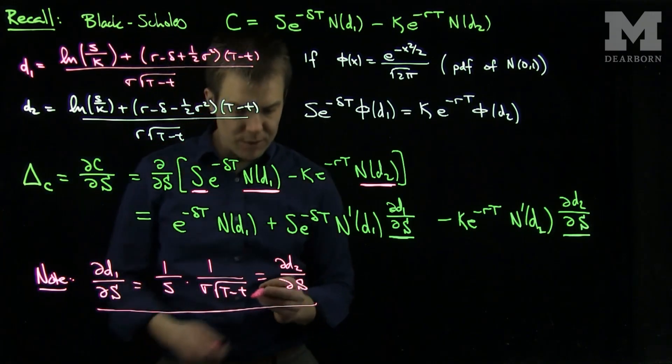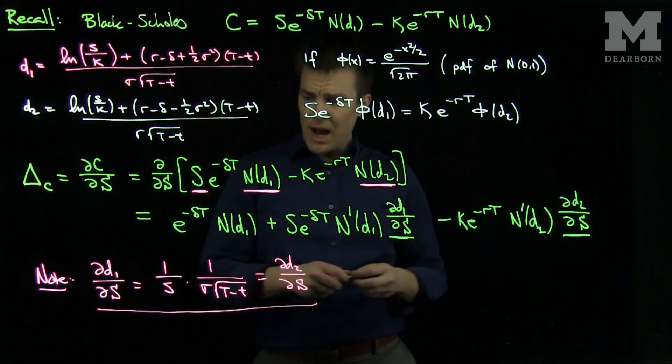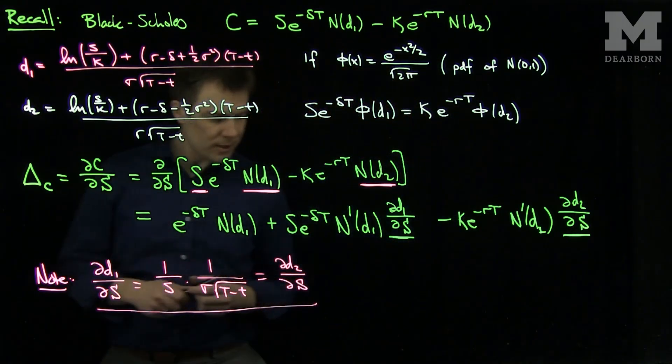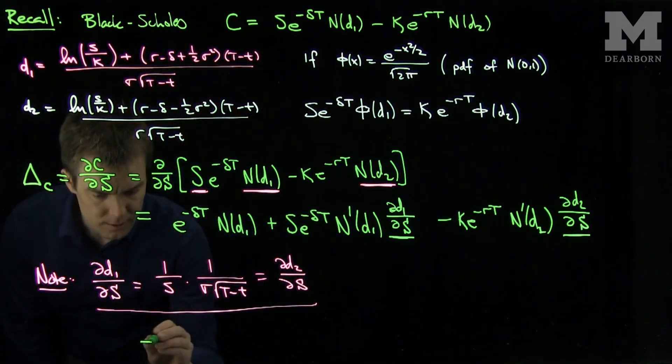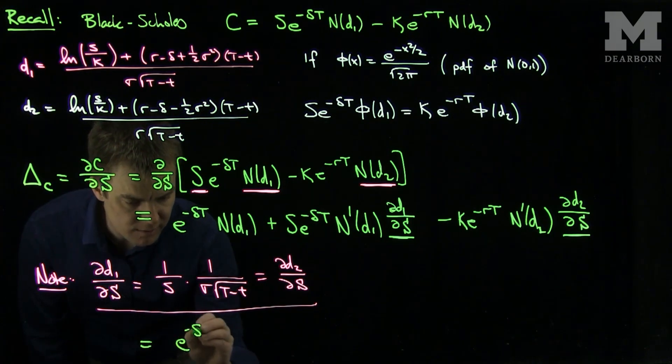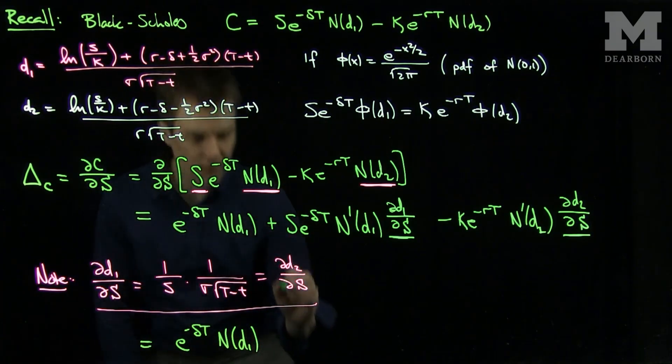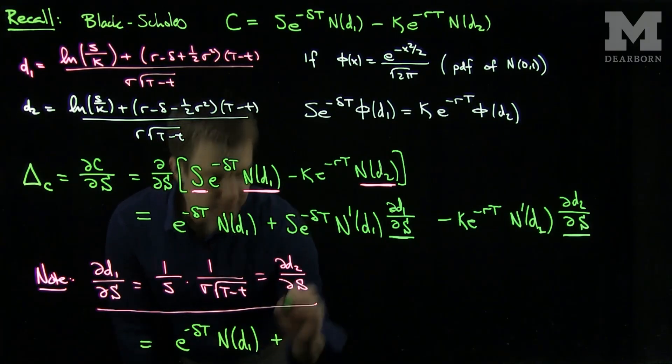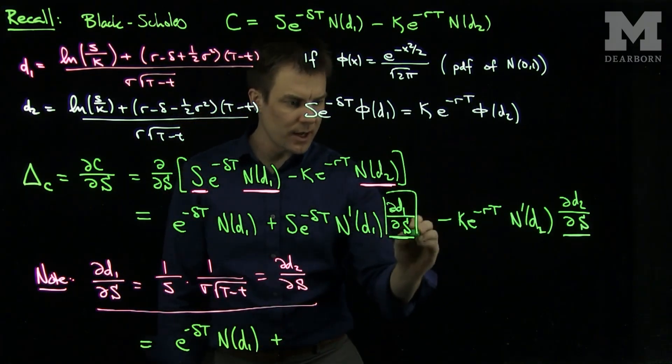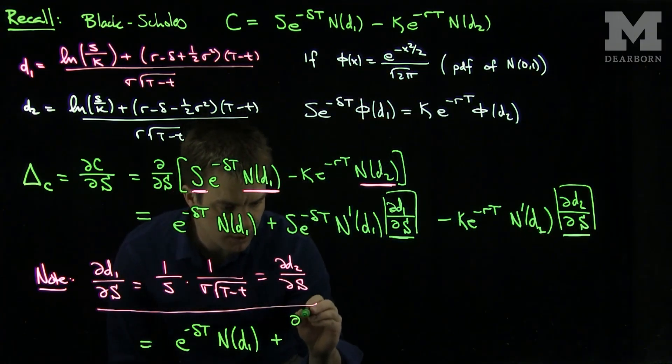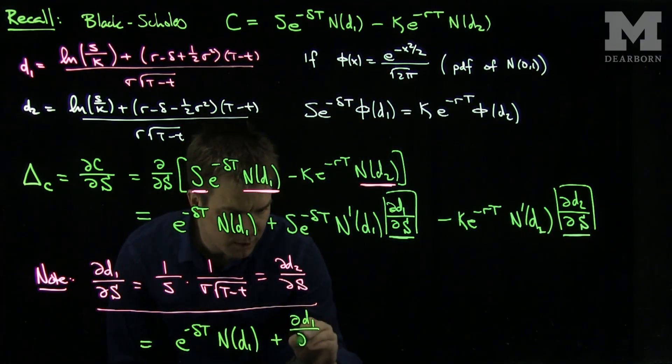So now what we can do is we continue our calculation. Our calculation now tells us that this will be e to negative delta t n of d1 plus I can factor out this term over here and this term over here exactly the same. So that will be plus partial d1 partial s.